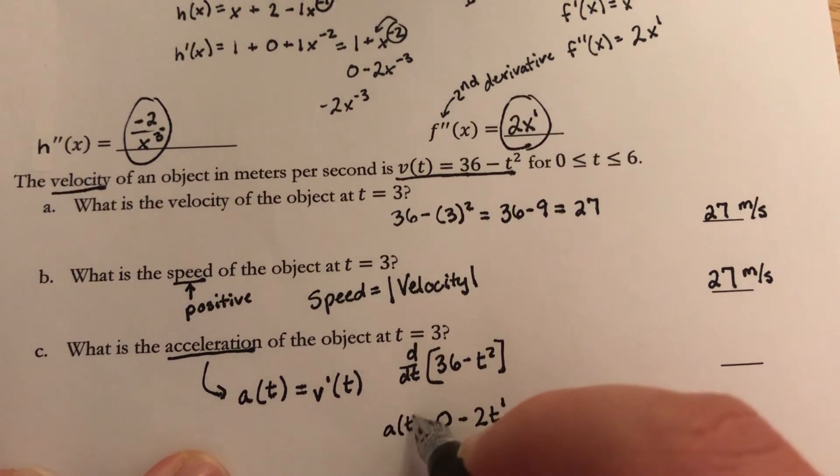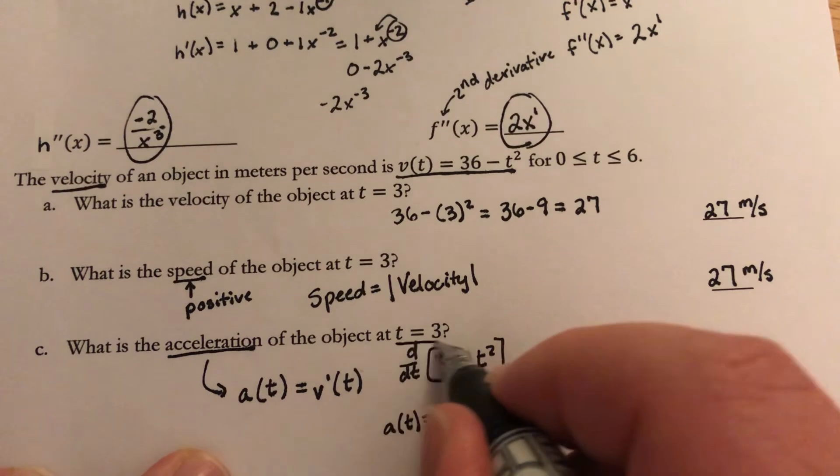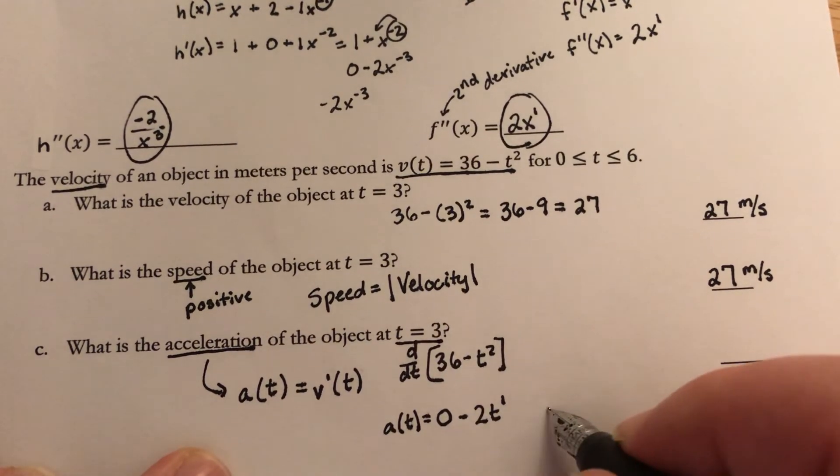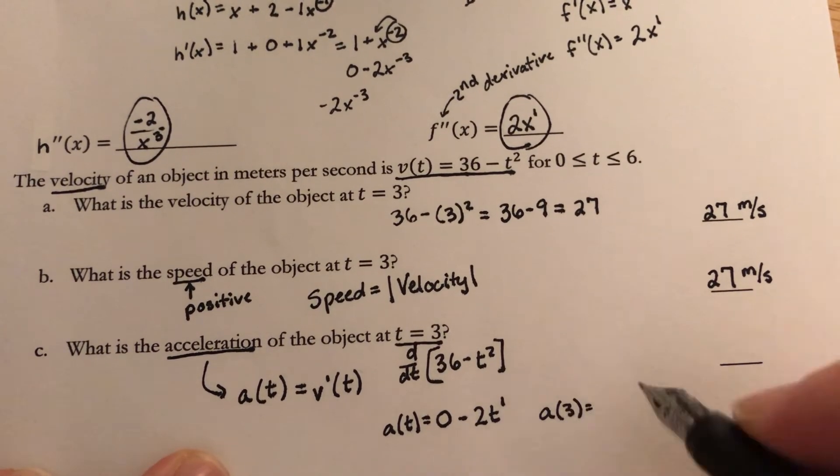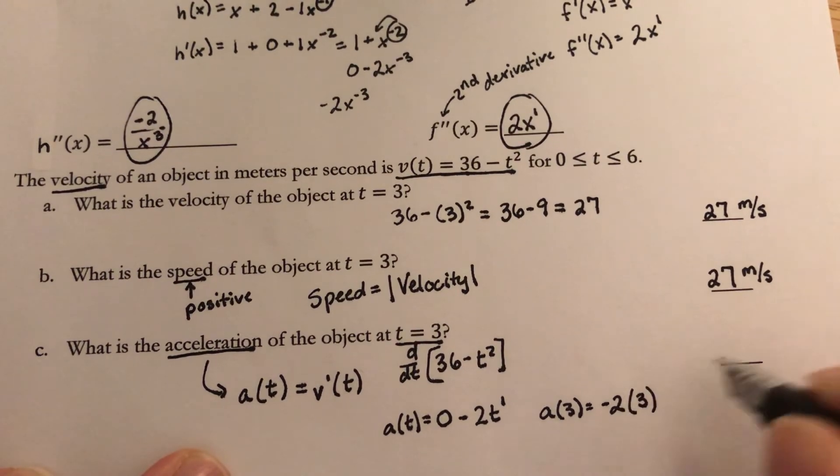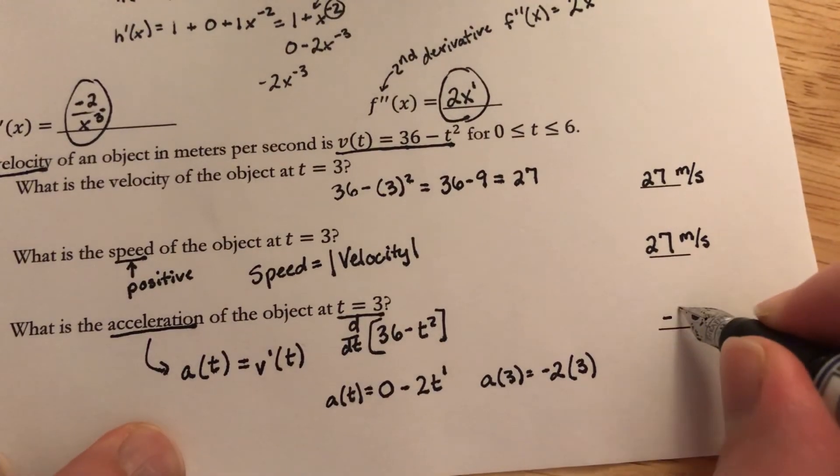That right there is my acceleration, and I want to know what it is at 3. So I'm just going to plug in 3. We'll do negative 2 times 3 essentially to the first power, which gives me negative 6.